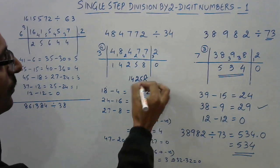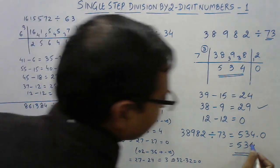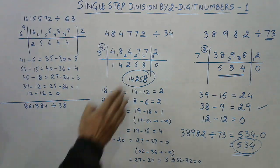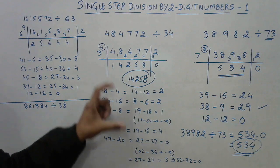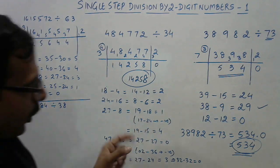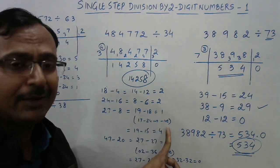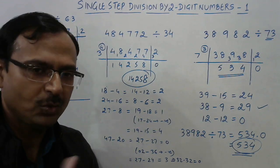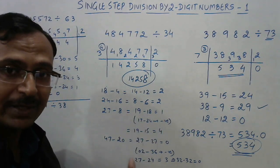So the answer for 484772 divided by 34 is 14258. Different steps were involved here, specifically handling the negative dividend situation. You need to practice this concept very well — about two to three hours of practice is required to master it.